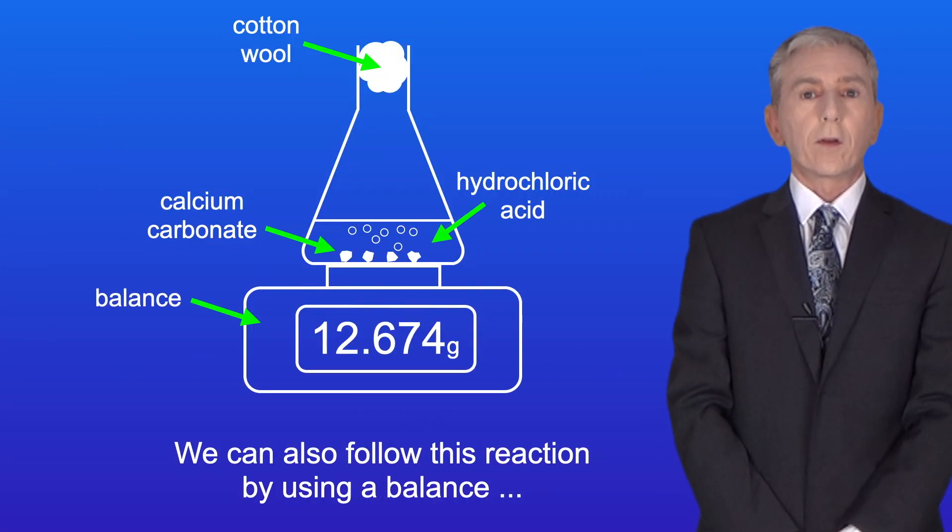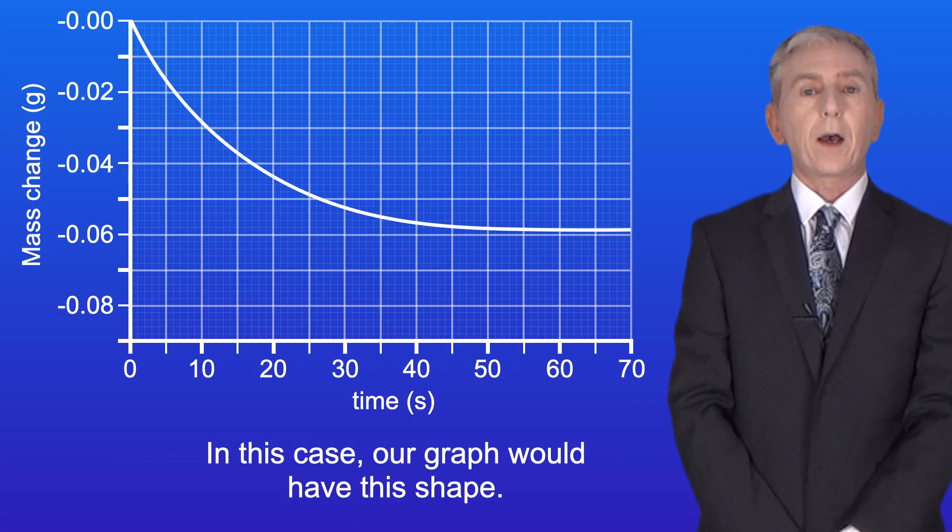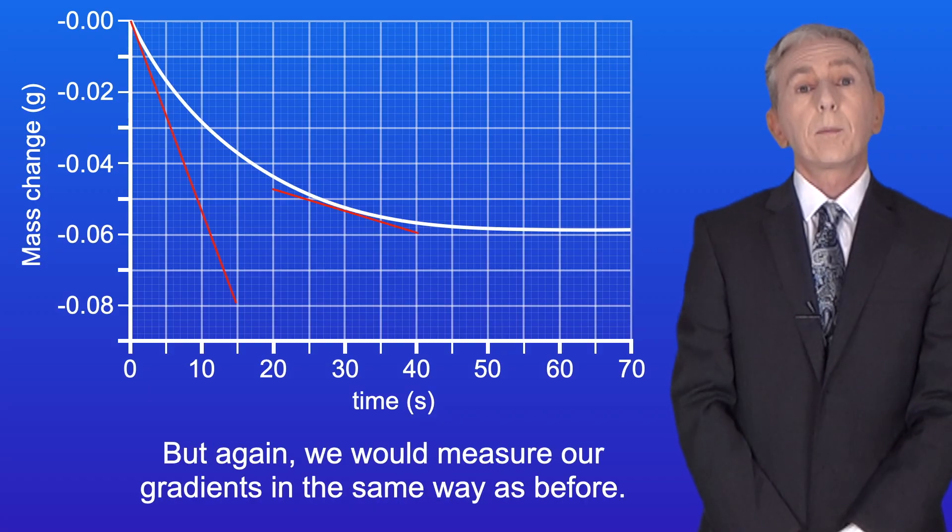Now we can also follow this reaction by using a balance to measure the mass of carbon dioxide released. In this case our graph would have this shape. But again we'd measure our gradients in the same way as before.